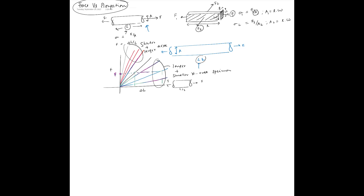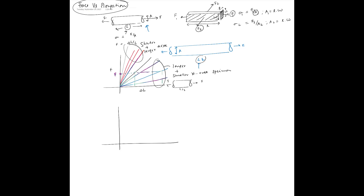We have all these linear force-vs-elongation plots for different geometries, but they are all the same material. Wouldn't it be nice to have just one plot for a given material? If you plot stress versus strain for all of these different-geometry specimens, you actually find there is only one line. Whether the length is L, 2L, L/2, or L/3, and whether the area is A, 2A, or A/2, a sigma-vs-epsilon plot collapses all of them into a single line — a very nice result.